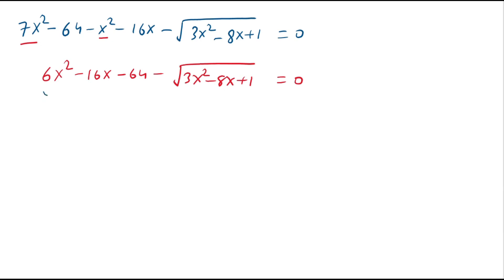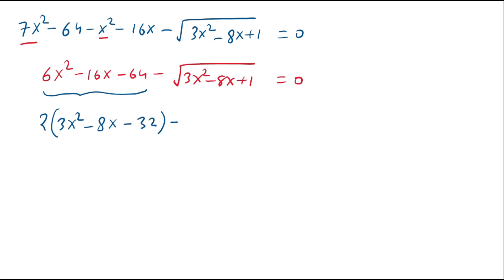Look carefully at these three terms. If we take out the factor 2: 2 times (3x squared minus 8x minus 32) minus square root of 3 times x squared minus 8x plus 1, equals 0. Look carefully inside the square root — we have 3x squared minus 8x plus 1.